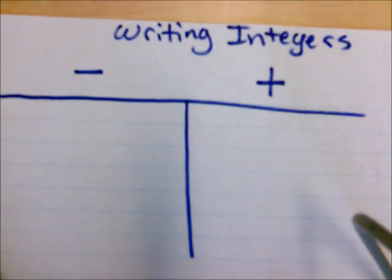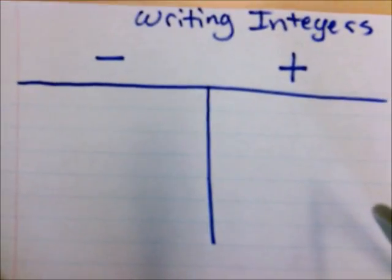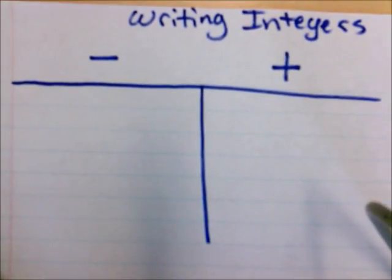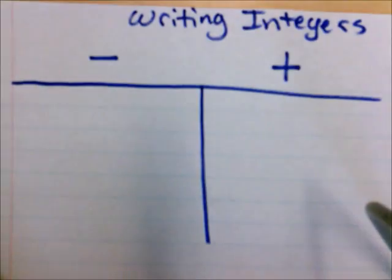When we're writing integers, what that means is we're going to be given a sentence, and I need to write the integer — what the numerical value of it would be. So in order to do that, I need to know just a handful of words that tells me whether this is a negative balance or a positive balance, depending on what it is. I was just going to run through a few words real quick.